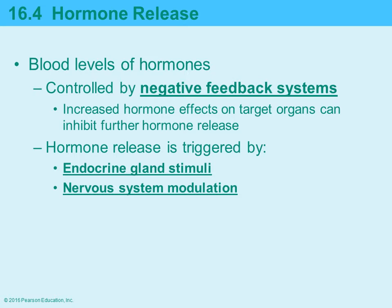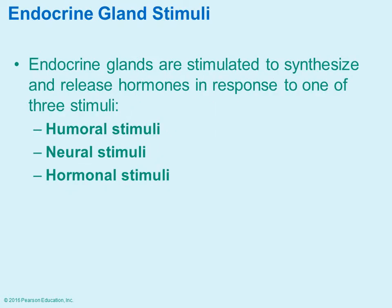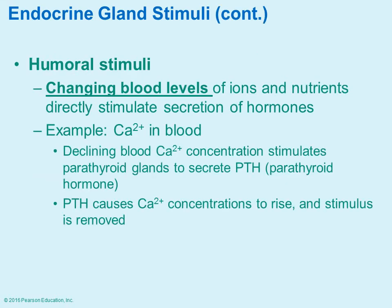Hormone release can be triggered by endocrine gland stimulation or nervous system modulation. There are several things that can stimulate an endocrine gland to synthesize and release a hormone: humoral stimuli, neural stimuli, or hormonal stimuli.